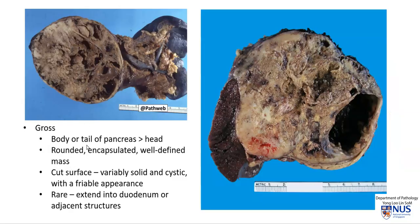This tumor tends to favor the body or the tail of the pancreas, however it can occur anywhere in the pancreas. As seen in these two examples — with the spleen visible in one case — this is a very well-circumscribed tumor. Often it is rounded and has a capsule, like we saw in this particular example, and the cut surface appears to be mixed with solid areas and cystic cavitation.